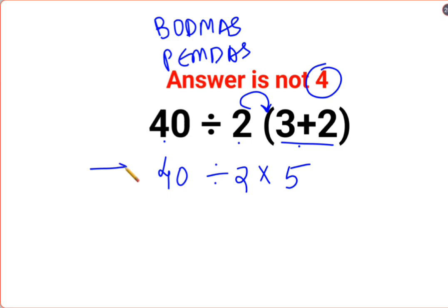Till here everything is fine, but after this step a lot of people think that 40 divided by 2 multiplied by 5 is 10. So just 40 divided by 10, answer is 4. No, that's not how these things work.